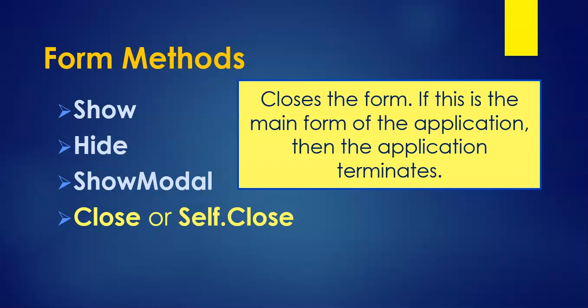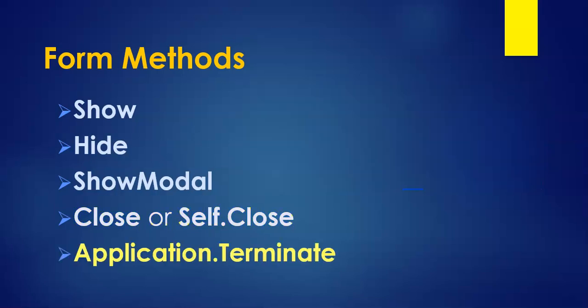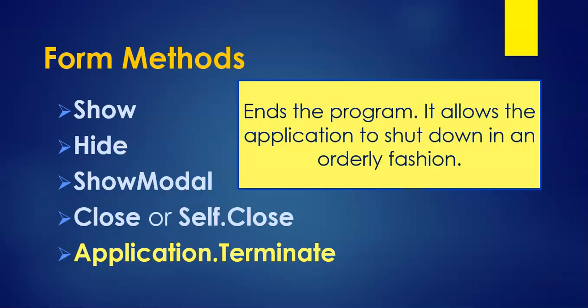If you want to close the program from a different form, you can use Application.Terminate, which closes everything and shuts the program down, allowing the process to end in an orderly fashion by releasing objects and freeing memory — which we'll learn more about in a later video. Those are the methods we are going to use today.